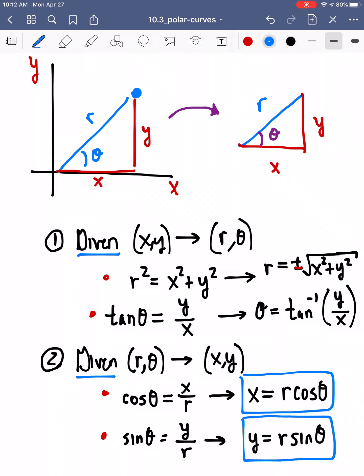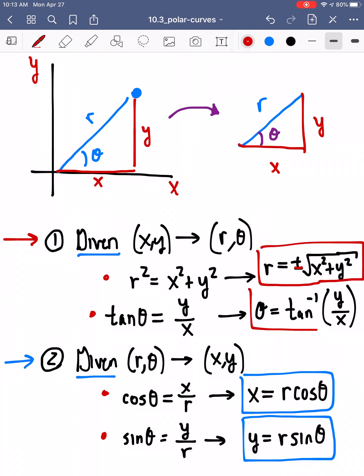So we have two situations: the second where we're given a point in polar coordinates and can get the equivalent point in Cartesian coordinates, and the first where we start with Cartesian coordinates x and y and go to polar coordinates r and theta. All of these relationships we found between r, theta, x, and y come from right triangles. The way I think about these coordinate transformations is like a currency exchange — we have the currency in r and theta coordinates and want to know what that's identical to in Cartesian rectangular coordinates x and y.